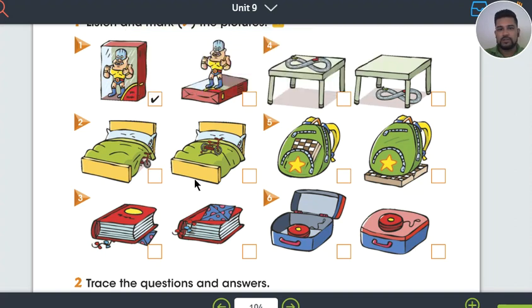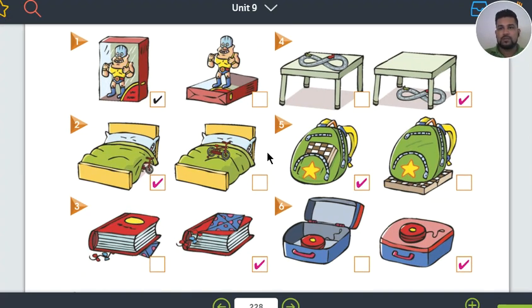Good. So, work on this activity. Trabajen en la actividad. Pausen el video. So, una vez que hayan trabajado en la actividad, we're going to check the answers. Yo les voy a mostrar las respuestas correctas. Pero, primero hay que hacerlo sin ayuda.